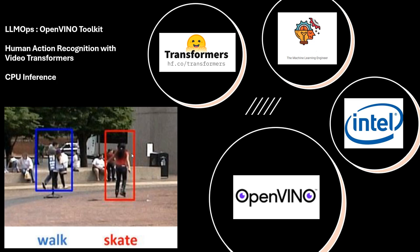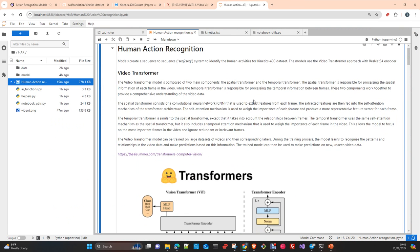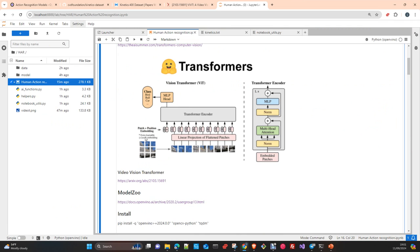The spatial transformer captures spatial features, the temporal transformer captures the differences between frames and how the sequence is changing. We use the attention mechanism — this is a transformer. Just as a conventional text transformer captures the relation of a specific token with all other tokens in a document, creating a map of weights showing how tokens relate to each other, here we do something very similar.